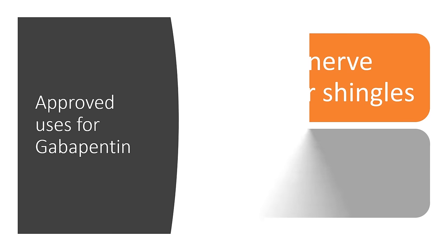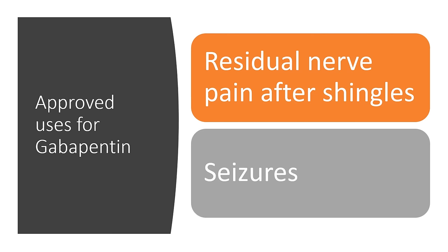What are some of the approved uses for gabapentin? It's approved for residual nerve pain after things like shingles — the viral infection can leave some residual nerve pain, and it is approved to treat that. It's also approved for seizures, although in my experience it's rarely used for that anymore.